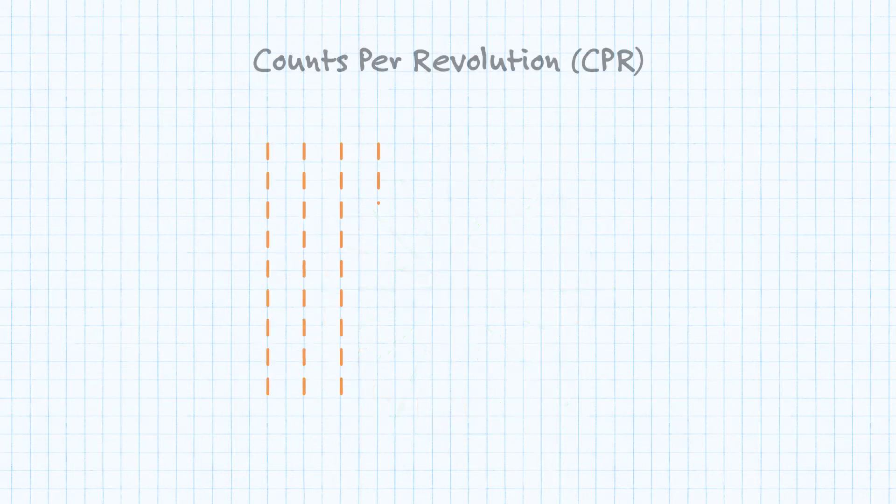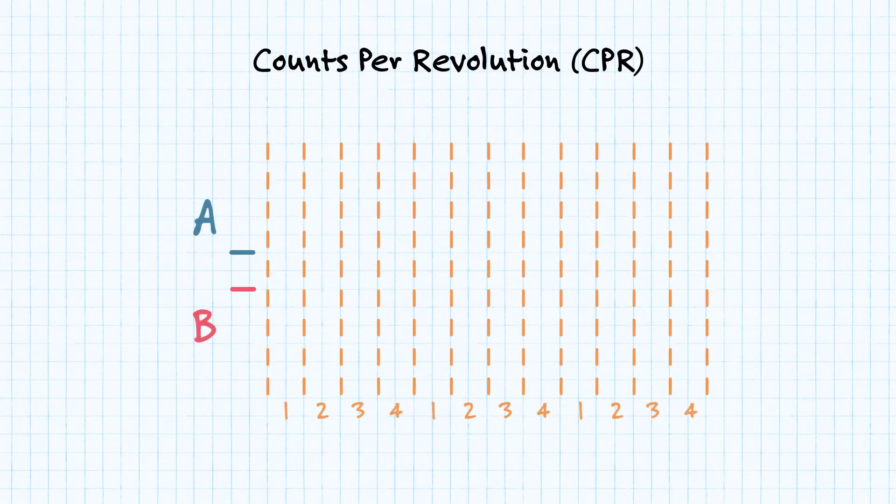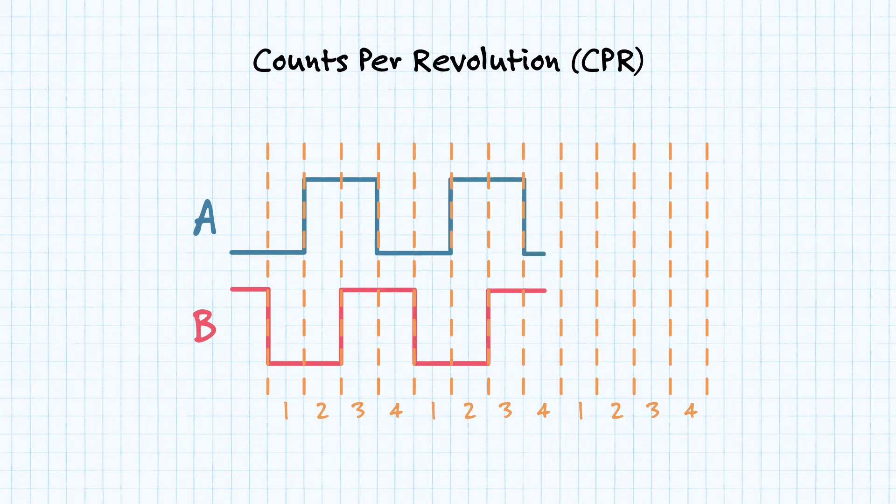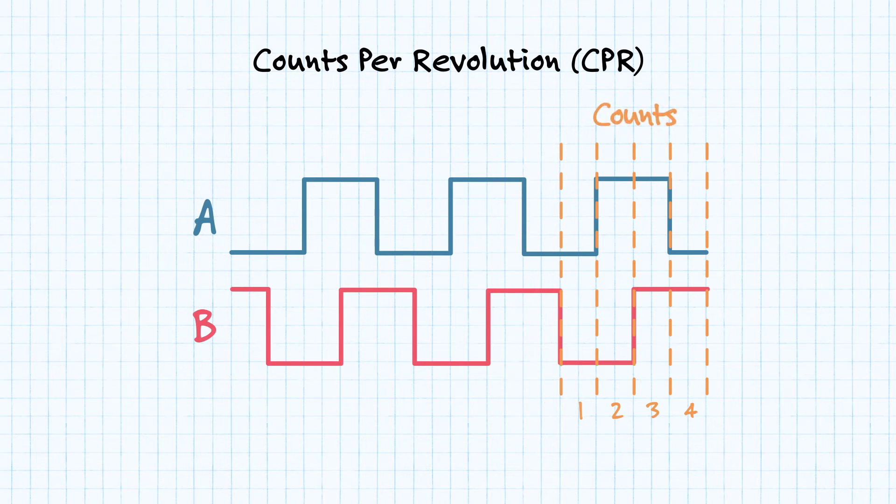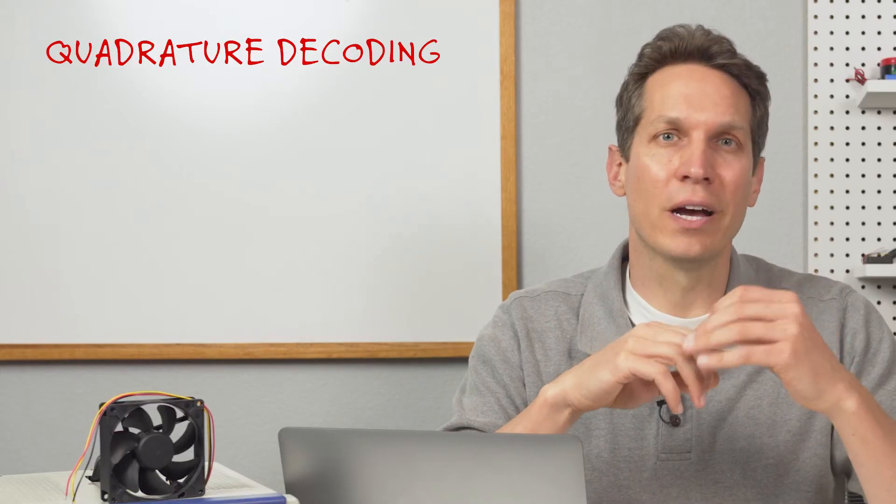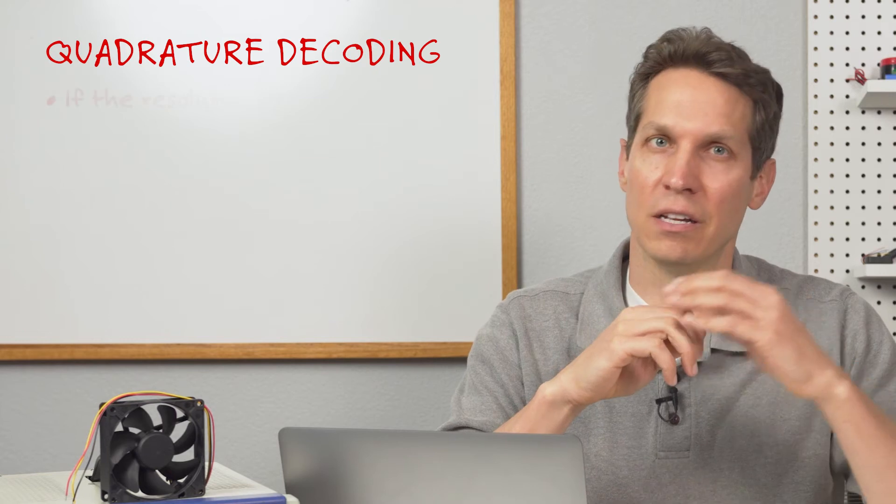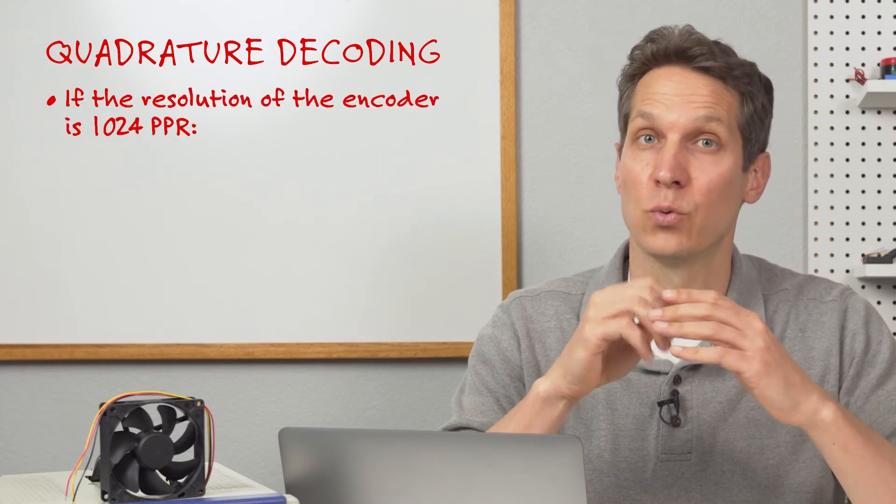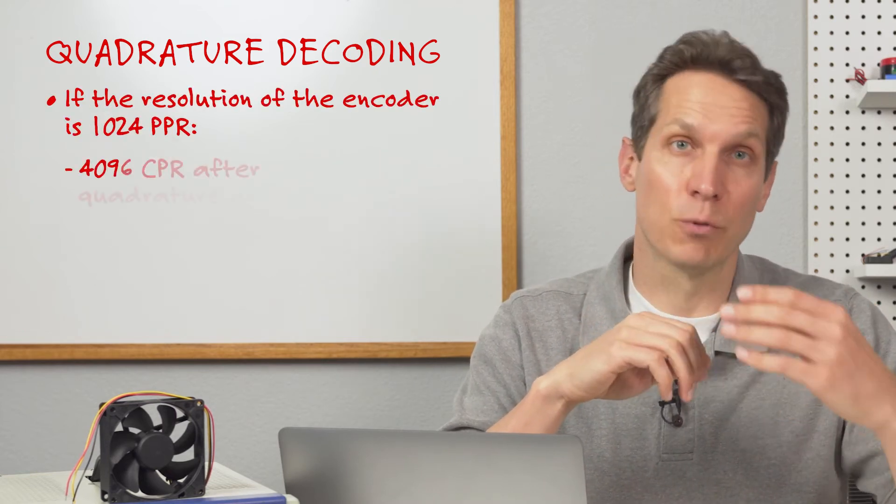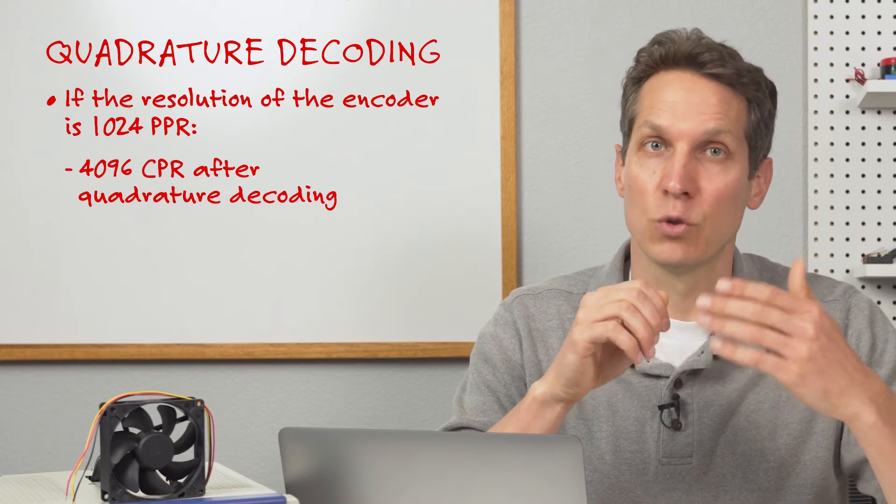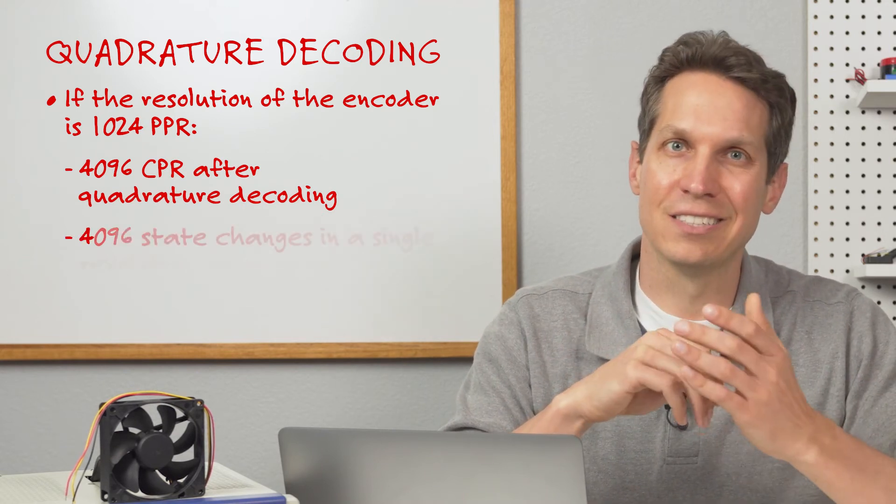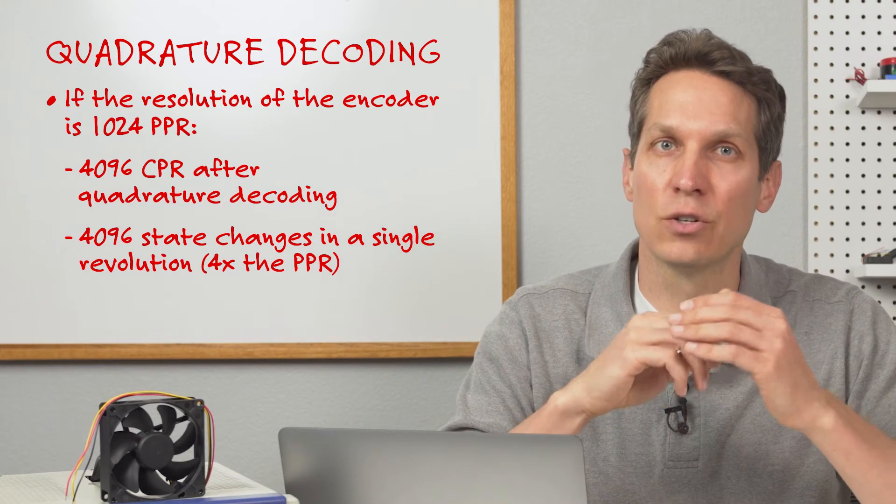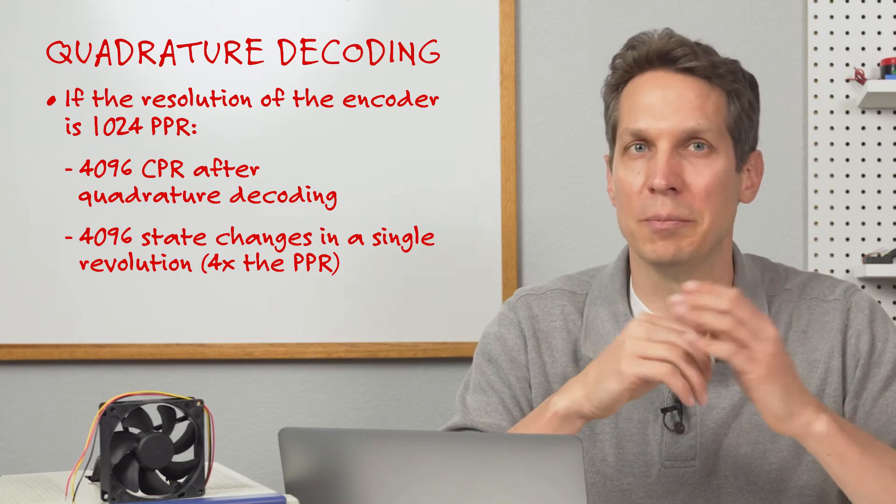This is distinguished from counts per revolution, which looks at the number of total states that occur over a revolution. Since each signal switches between high and low states, and there are two output signals, you end up with four distinct states for every period. This is referred to as quadrature decoding. If the resolution of the encoder is 1024 PPR, there would be 4096 CPR after quadrature decoding. That is to say, there are 4096 state changes in a single revolution, or 4 times the PPR.